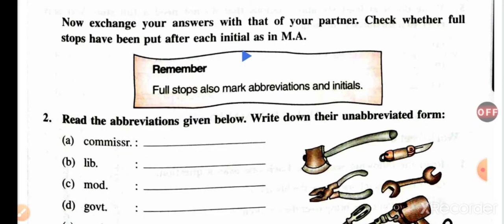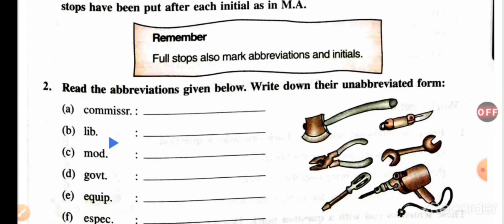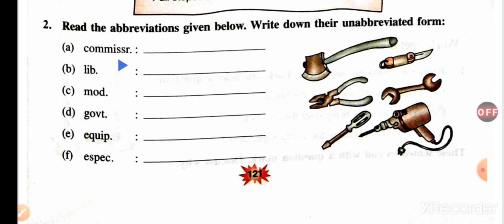Now exchange your answers with that of your partner and check whether full stops have been put after each initial — as in M.A. Full stops also mark abbreviations and initials. So if you are writing an abbreviation, you can use a full stop like this.